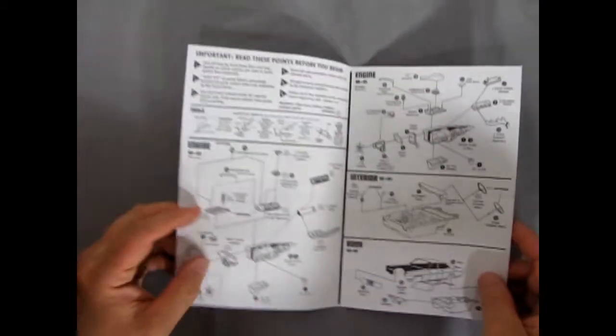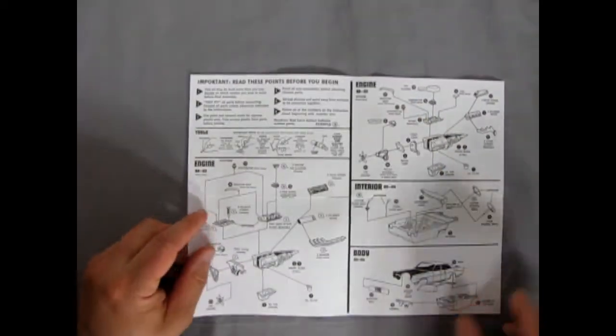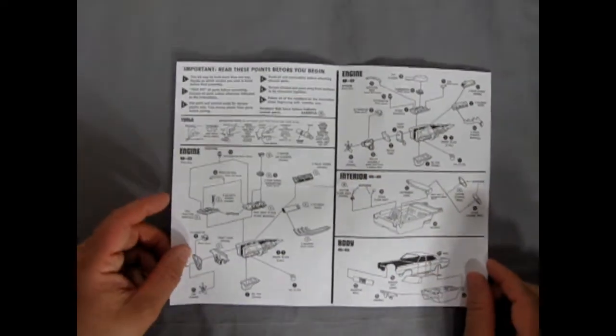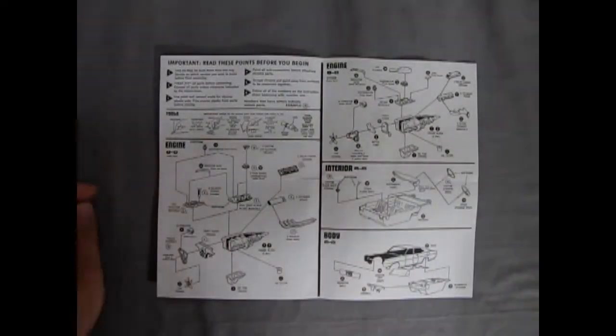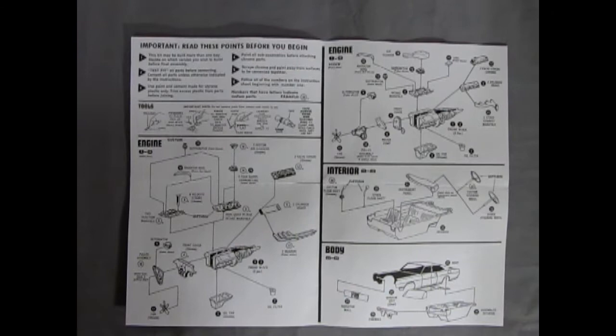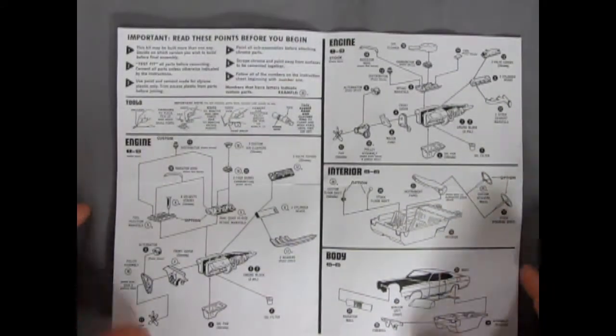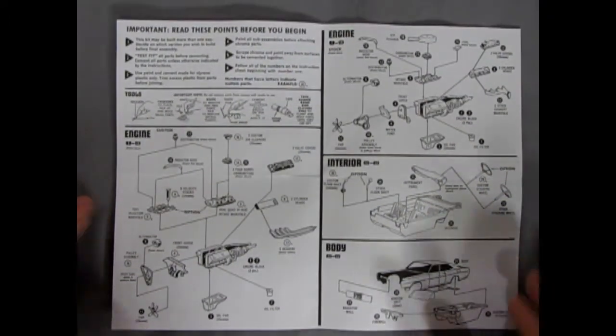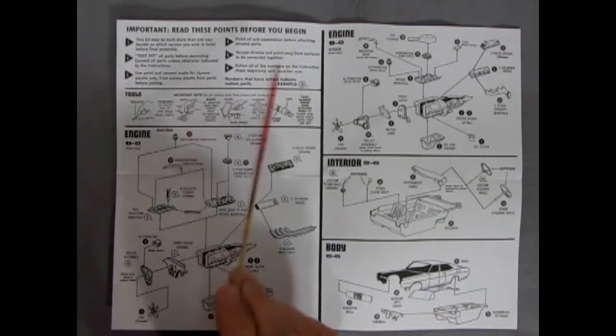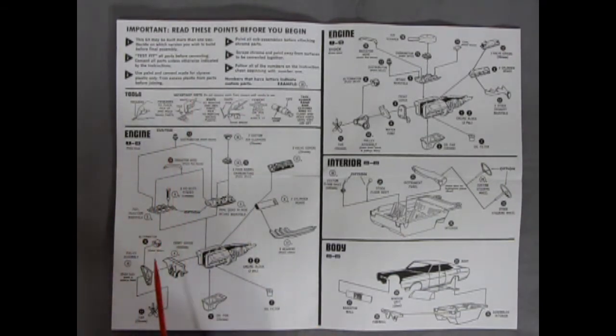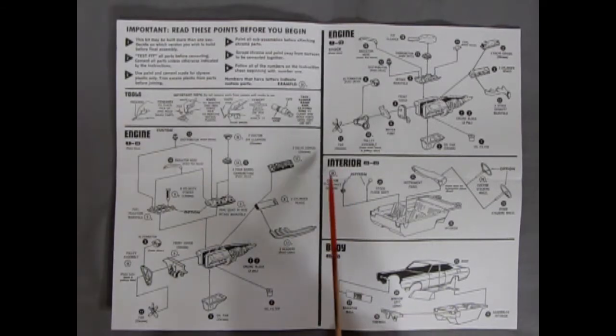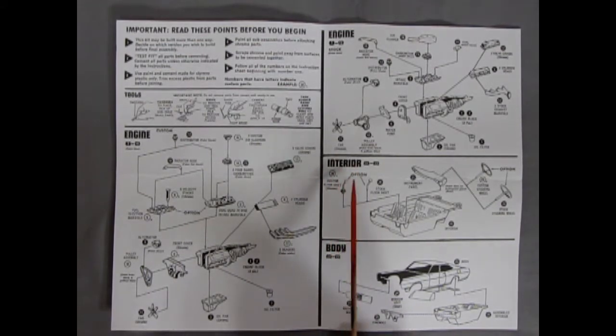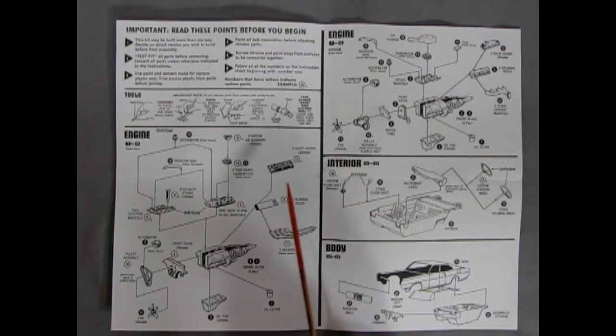So we'll just open this up here. It's almost like Johan style back in the day. And then we'll just crank the camera back in a little. It's important to read these points before you begin. These are also like the old AMT Star Trek decals. In fact, they have that same kind of weird bold sci-fi lettering in here.